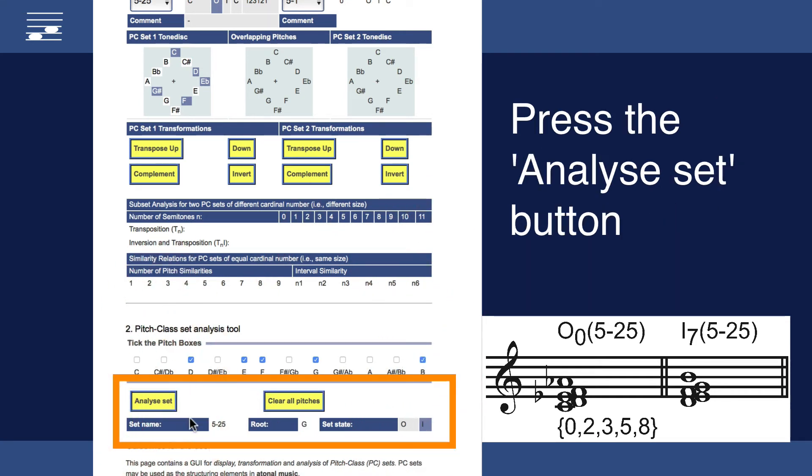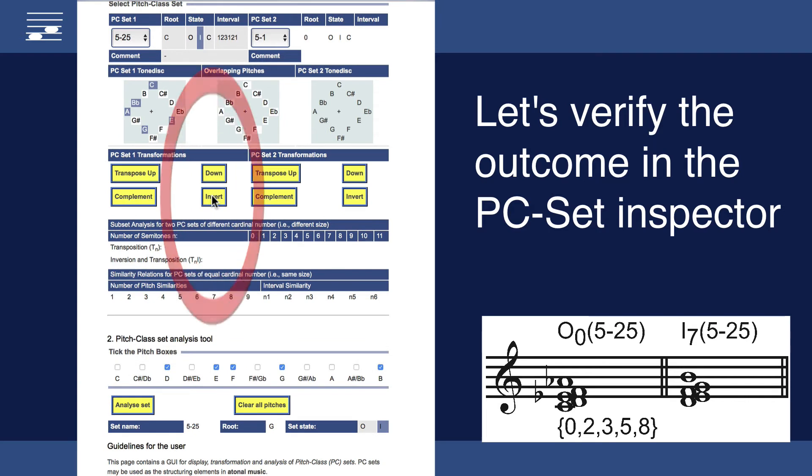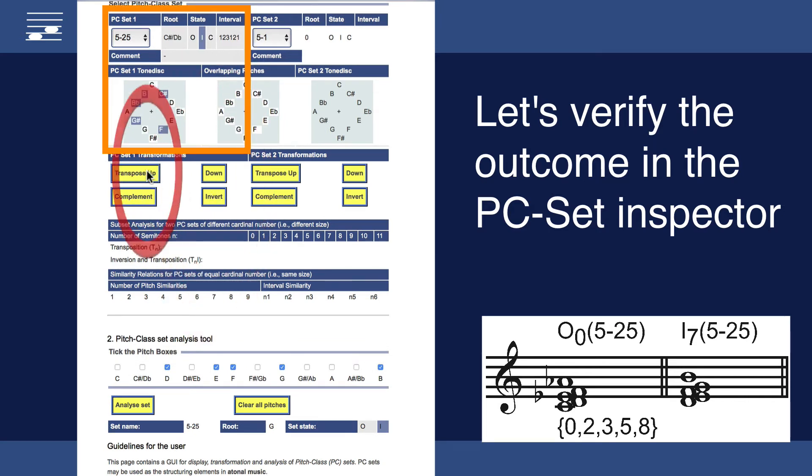Press the analyze button and see the result. Here the inverted form of 5-25 with root G. Loading this set in the inspector confirms the analysis result.